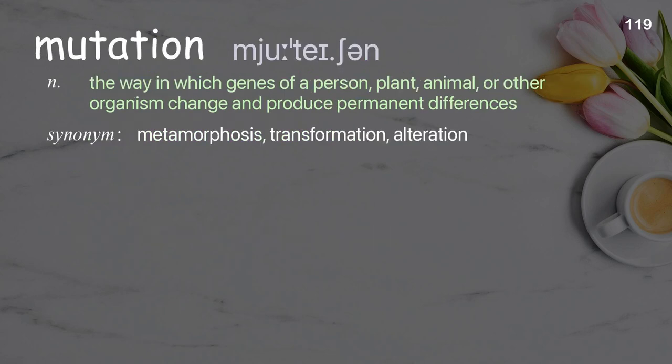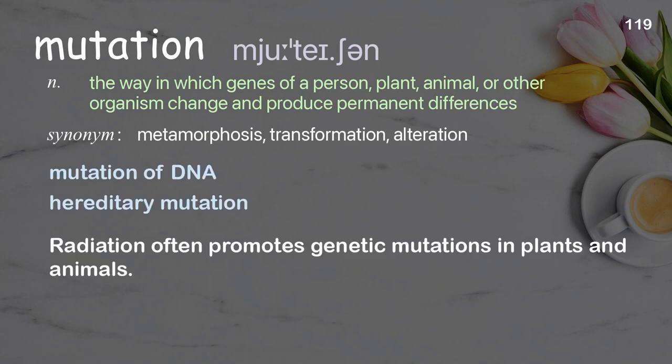Mutation: the way in which genes of a person, plant, animal, or other organism change and produce permanent differences. Examples: mutation of DNA, hereditary mutation. Radiation often promotes genetic mutations in plants and animals.